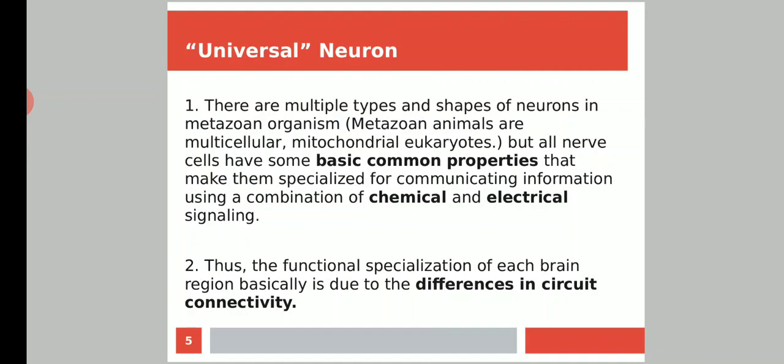The basic difference or functional specialization of each brain region is due to differences in circuit connectivity. Using the same capacitors, resistors, and transistors, but connecting them in a particular manner, we get different circuits—a regulated power supply or an operational amplifier. The basic building blocks are the same, but the circuit connections are different, so different brain regions perform different activities.